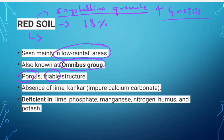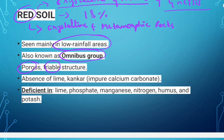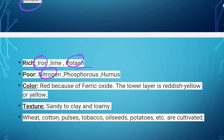The soil develops a reddish color due to the wide diffusion of iron in crystalline and metamorphic rocks. Red soil looks yellow when it occurs in hydrated forms. The soil lacks lime and kankar — which is impure calcium carbonate. It is deficient in phosphate, manganese, nitrogen, humus and potash, but is rich in iron. The texture is sandy to clay loamy. Crops cultivated include wheat, cotton, pulses, tobacco, oilseeds and potatoes.